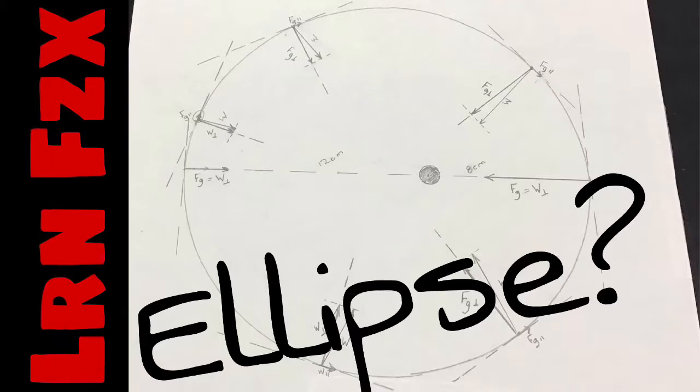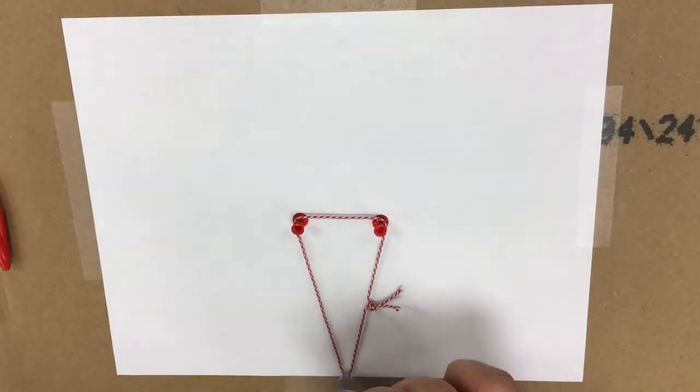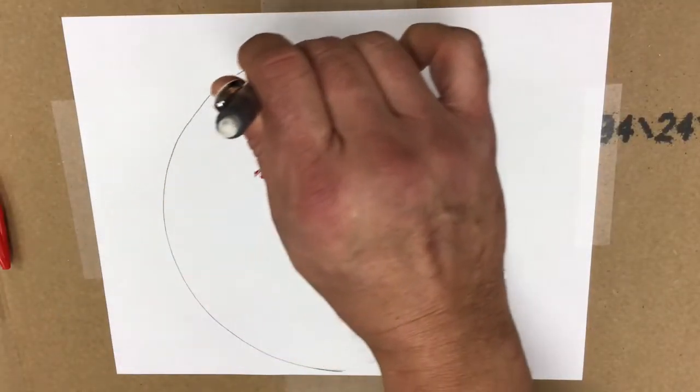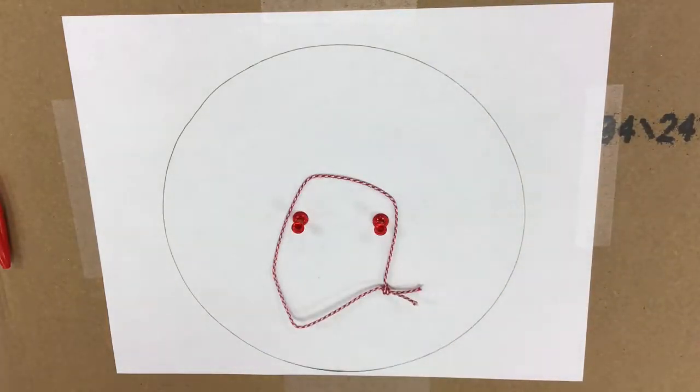Ellipses. How you can make them and how nature makes them too. Let's learn physics. This is all you need to do to make an ellipse. Take two little pins and wrap a little piece of string around it and do that. There you go. That's your ellipse.